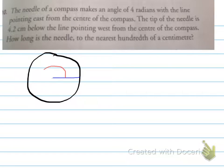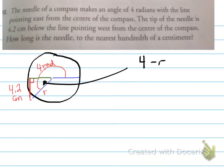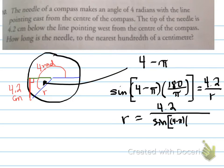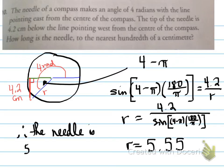Alright, last one. The needle of a compass makes an angle of 4 radians with the line pointing east from the center of the compass. The tip of the needle is 4.2 centimeters below the line pointing west from the center of the compass. How long is the needle to the nearest hundredth of a centimeter? So this is all the information here that we need to find. And once you've done that, you calculate it according to the formula. Ultimately, the needle is 5.55 centimeters long.